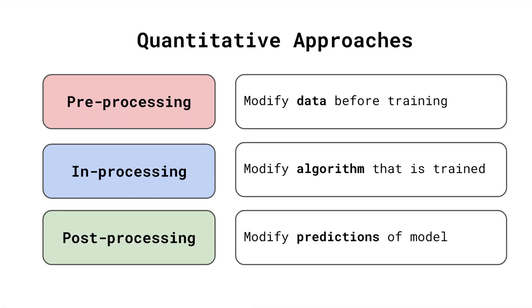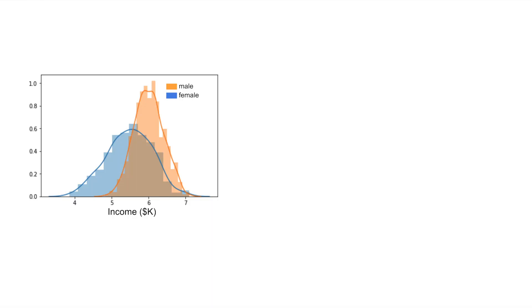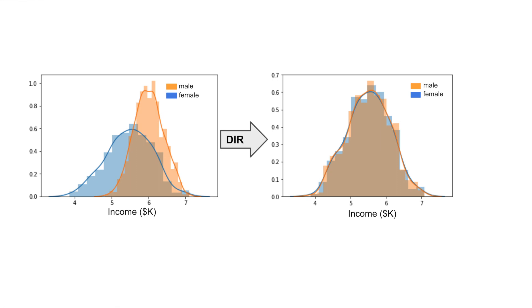If we discover that our model is unfair, we would naturally want to correct it. Various quantitative measures have been developed, divided into three groups based on which stage of the model development process they are applied. We have pre-processing methods which modify data, in-processing methods which modify the algorithm, and post-processing methods which modify predictions. An example of a pre-processing method is disparate impact removal, which works by modifying features so the distribution for two groups becomes similar.